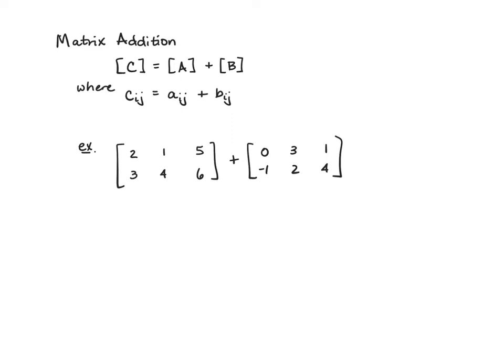Two matrices can be added together as long as they are the same size and shape. So all of these must be the same size and shape. If one of them is m by n, all of them have to be m by n. But the way you add is you just simply add the terms that are in the same location.